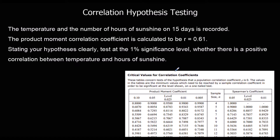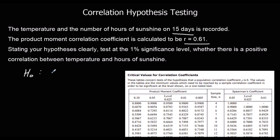We're going to be testing how significant a correlation of a sample is. Here we've got a question: the temperature and the number of hours of sunshine on 15 days is recorded. The product moment correlation coefficient is calculated to be 0.61. Stating your hypotheses clearly, test at the 1% significance level whether there is a positive correlation between temperature and hours of sunshine.